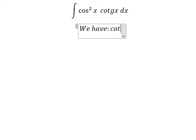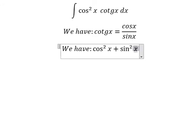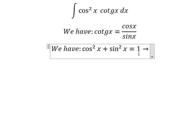We have cotangent x equals cosine x over sine x. Next, we have cosine squared x plus sine squared x equals one, so we put sine squared x to the right.